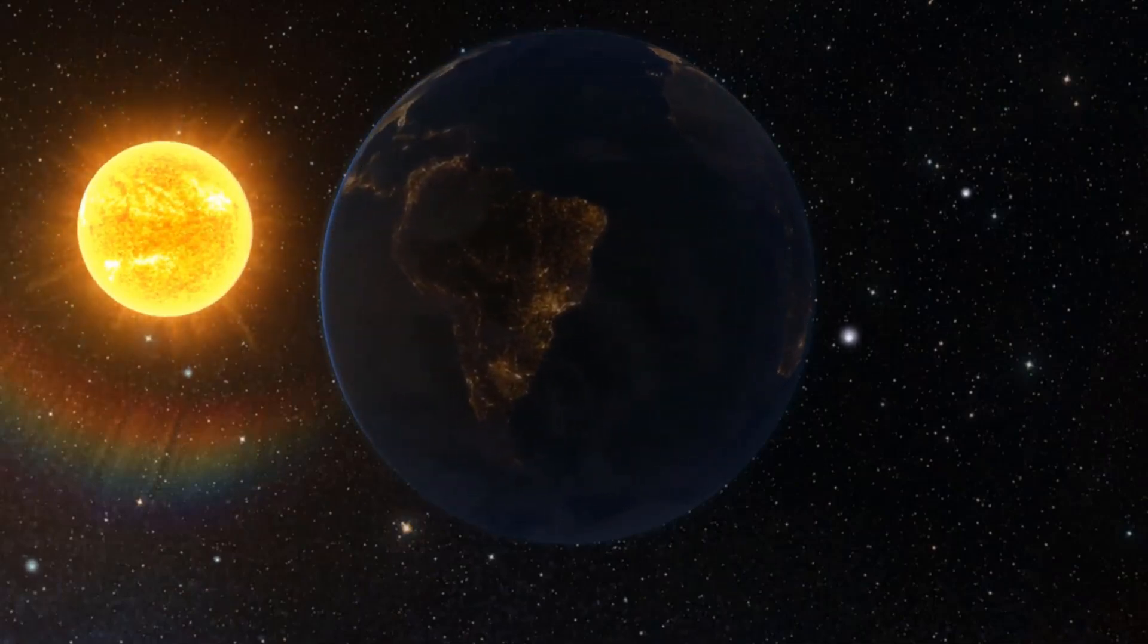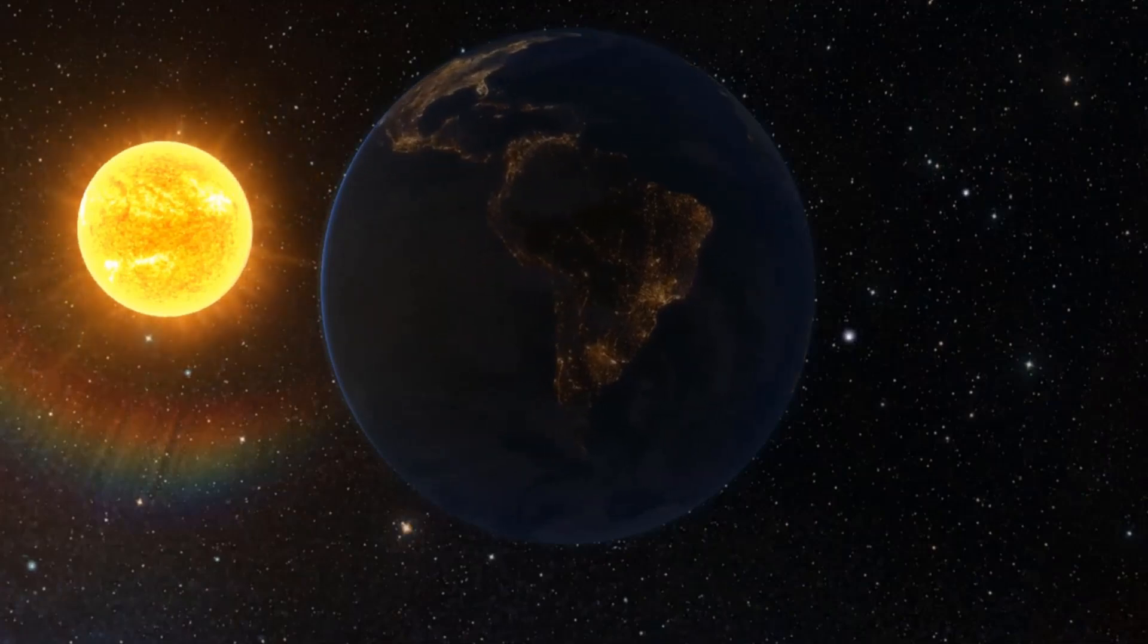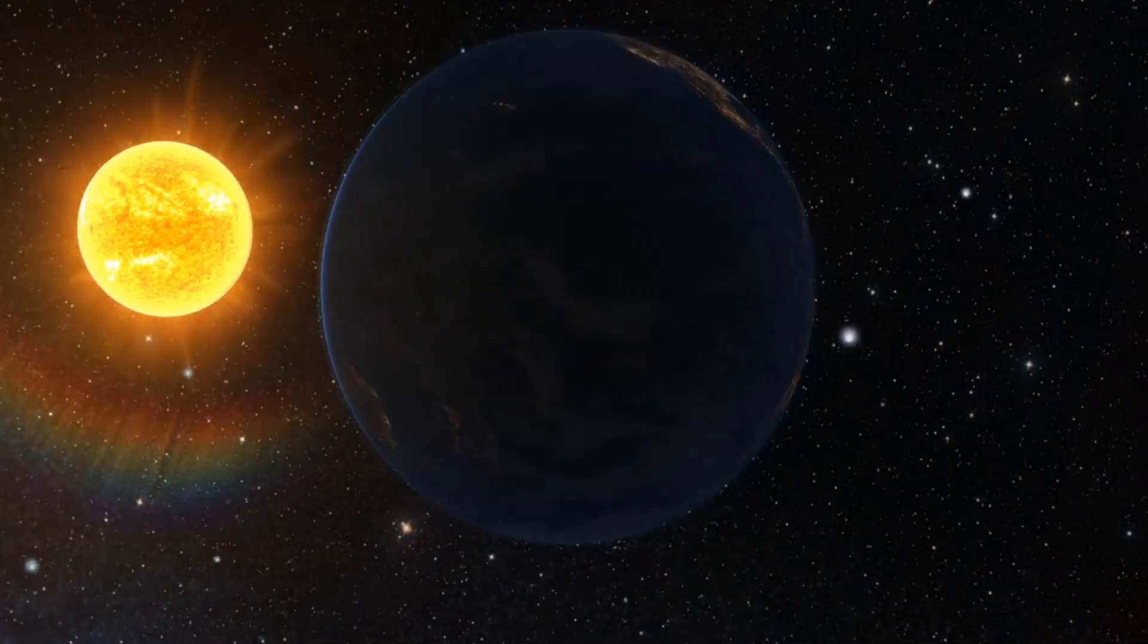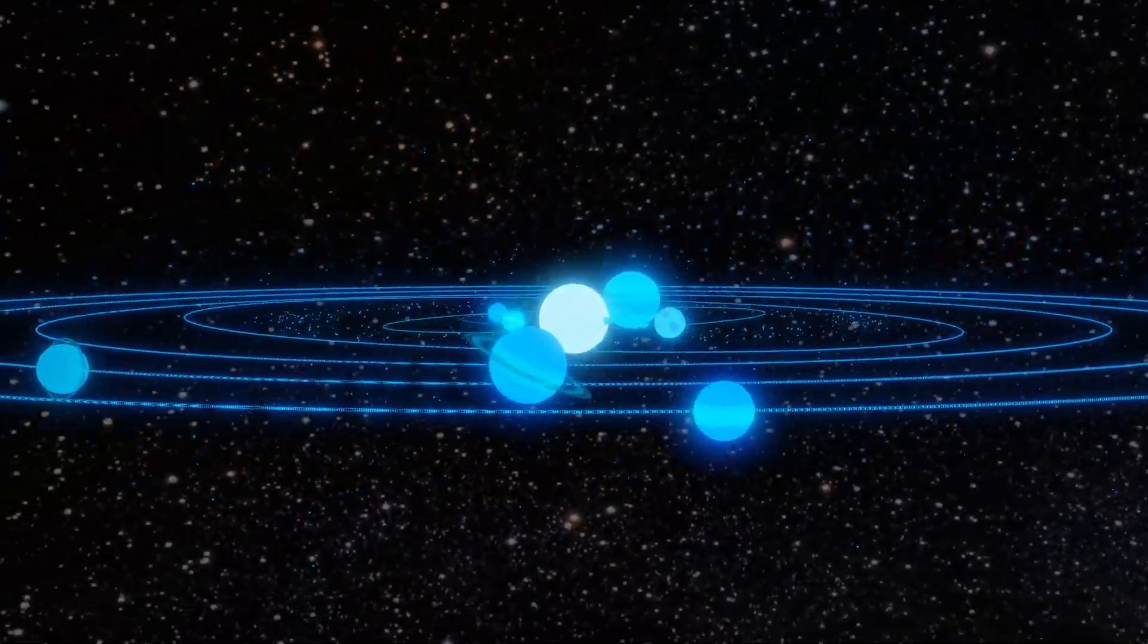However, some studies have estimated that climate change could cause the Earth's rotation speed to change by up to 1.7 milliseconds per century, which is comparable to the tidal acceleration. As the Earth's rotation slows down, it sets off a chain reaction of effects that ripple through various aspects of our lives and our planet.